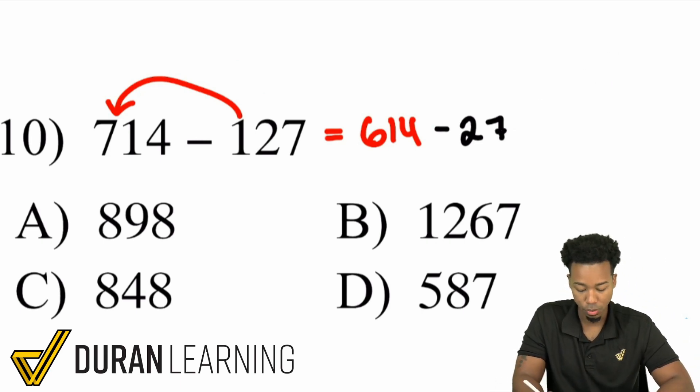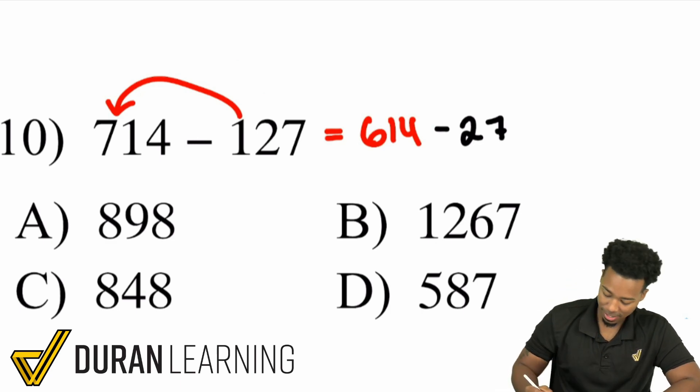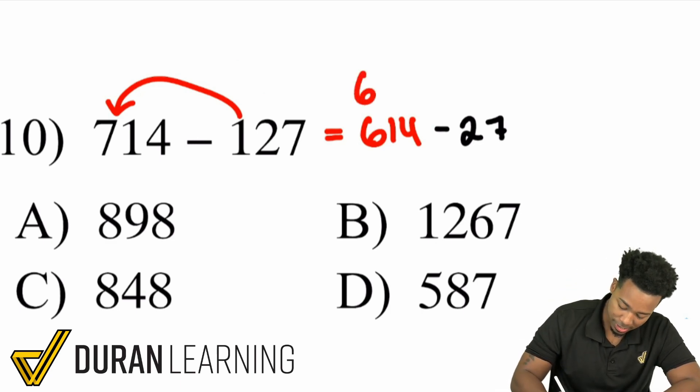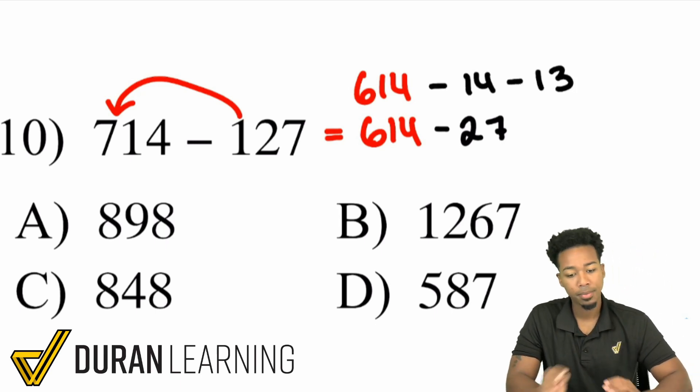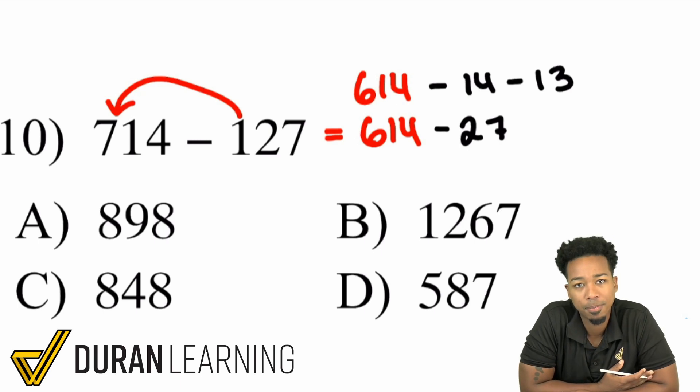What we can do instead is this. I can treat this as 614 minus 14 minus 13. I can treat it like that my party people. Why does that work? Well it works because think of it like this.